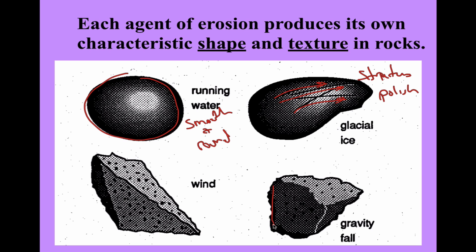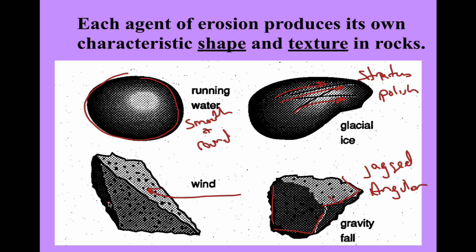Gravity produces jagged or angular edges as pieces break. Wind creates an asymmetry where one side is different from the other, due to the way wind carries sediment and weathers one side of the rock.